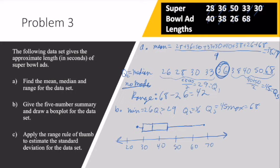For part C, I want you to apply the rule of thumb and estimate the standard deviation. Remember that our estimate for our standard deviation is range divided by 4. So I'm going to take my range, which I found to be 42, I'm going to divide that by 4, and I get 10.5.